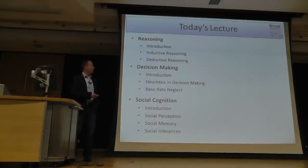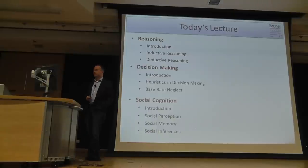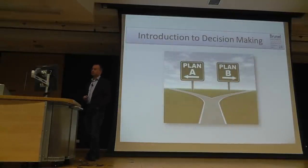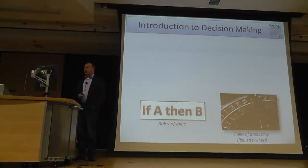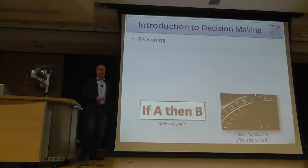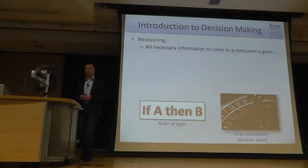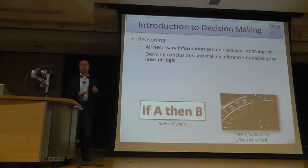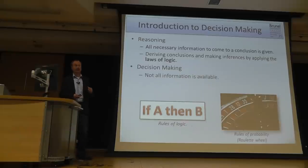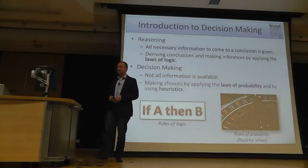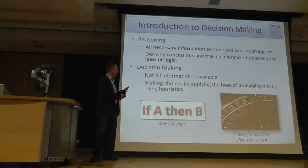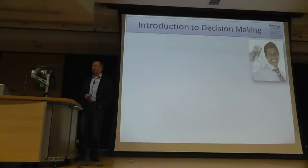Let's go over to decision-making. In reasoning we have all necessary information to come to a conclusion and we use the laws of logic. In decision-making, we don't have all information available, and instead have to use laws of probability and heuristics. We will speak about these heuristics quite a bit.